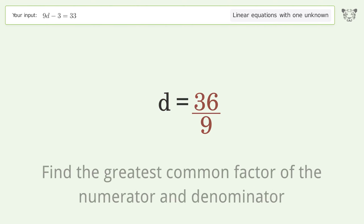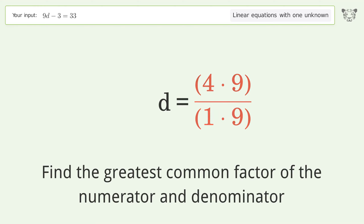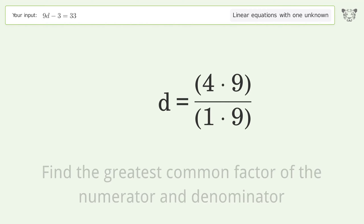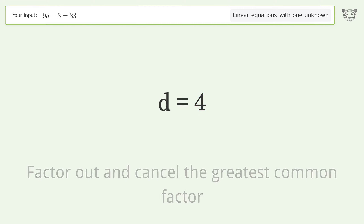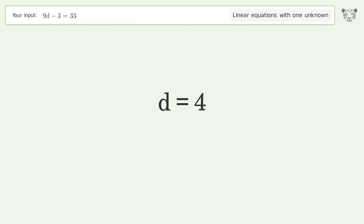Find the greatest common factor of the numerator and denominator, then factor out and cancel the greatest common factor. And so the final result is d equals 4.